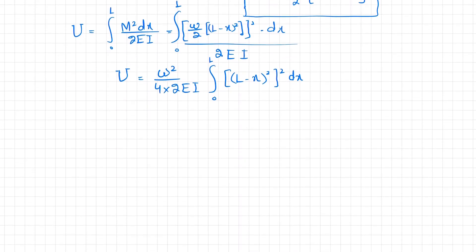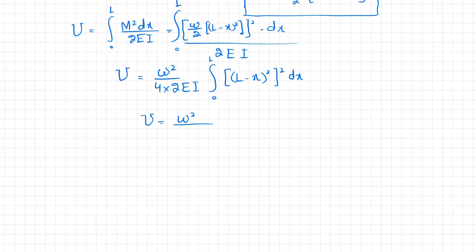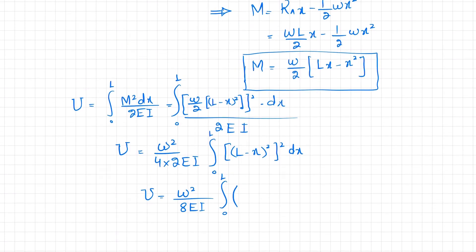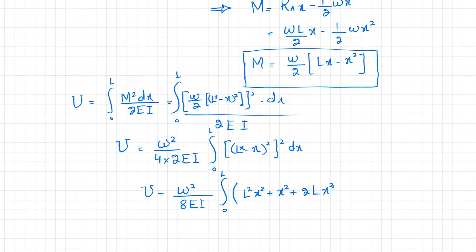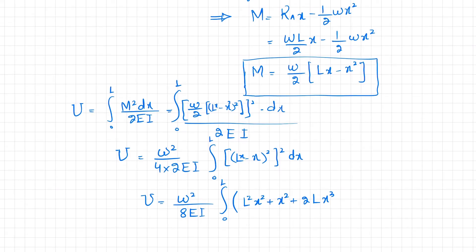Further simplifying: U = (w²/8EI) × integral from 0 to L of (Lx − x²)² dx. Expanding (Lx − x²)²: this gives L²x² − 2Lx³ + x⁴. So the integrand becomes L²x² − 2Lx³ + x⁴.